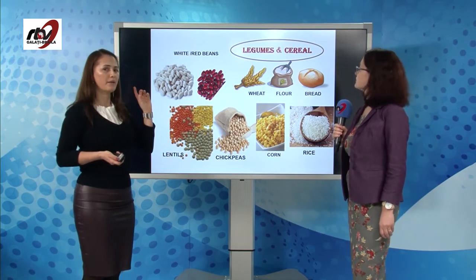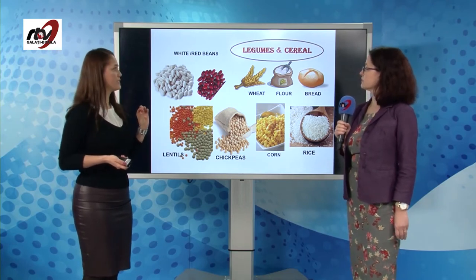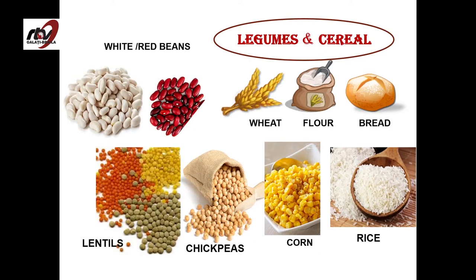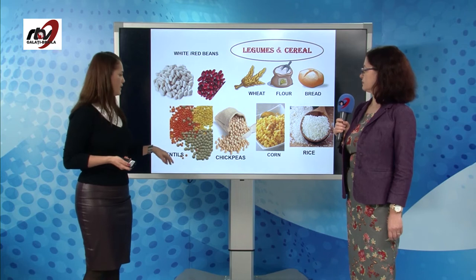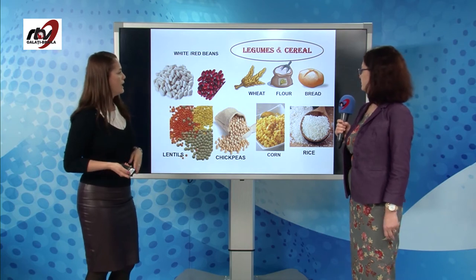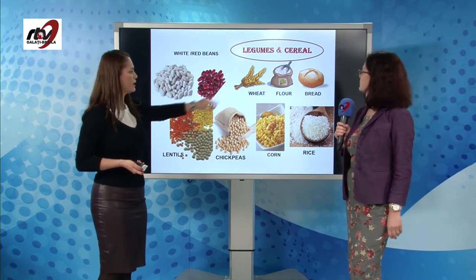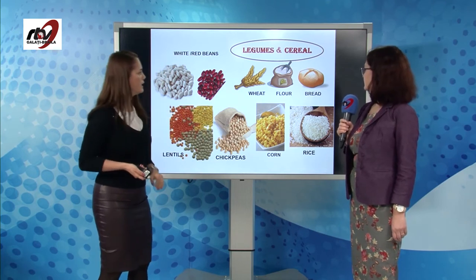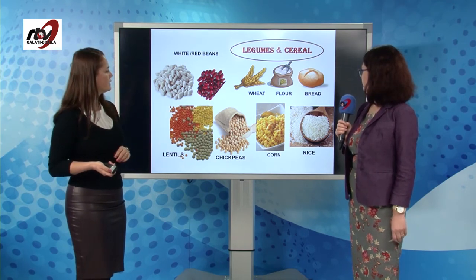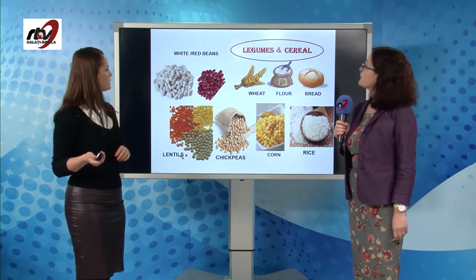Legumes — pay attention here. Legumes are translated into Romanian as leguminoase. The most famous legume is the bean. We have white beans and red beans. Then lentils — in Romanian, linte. Then chickpeas. From flour, which can be made of wheat or corn, you make bread. And one more important one here is rice.